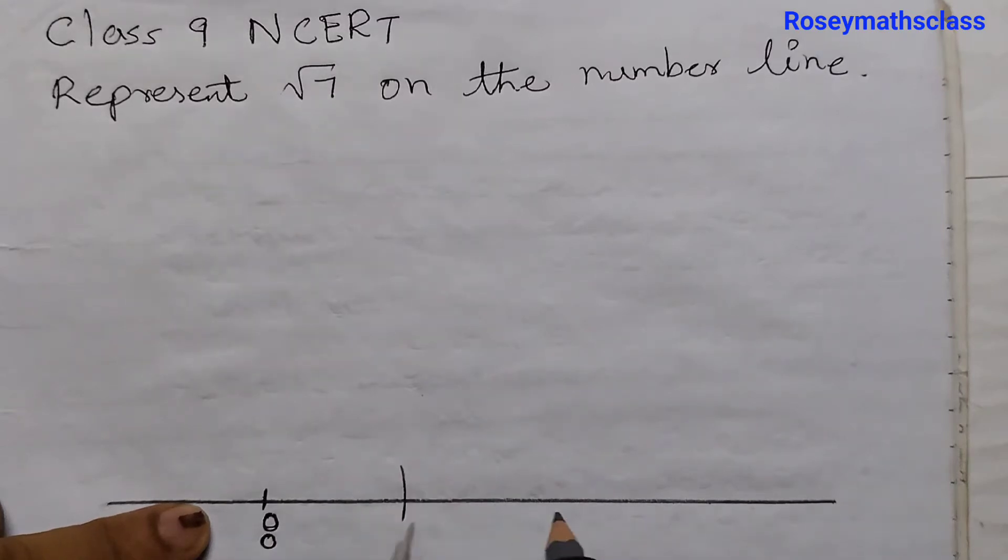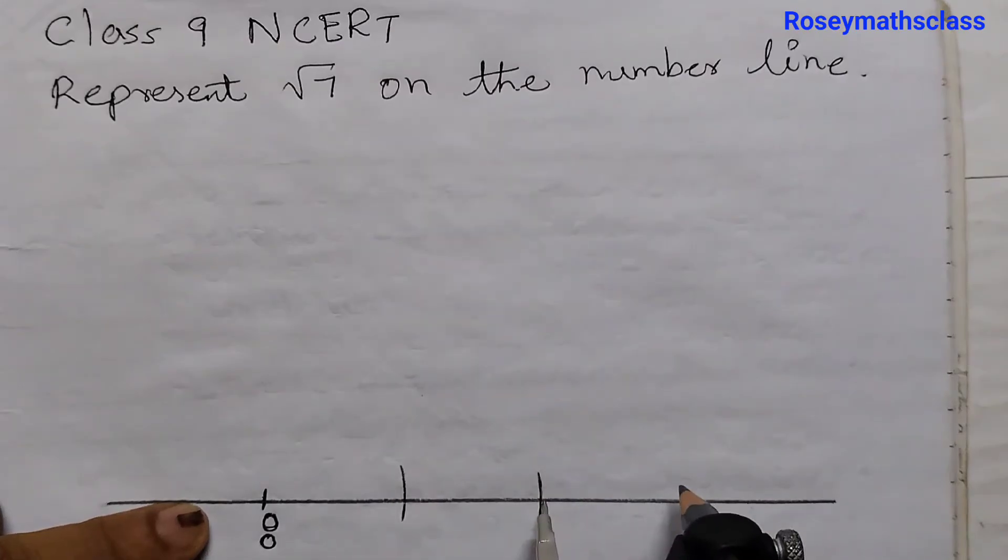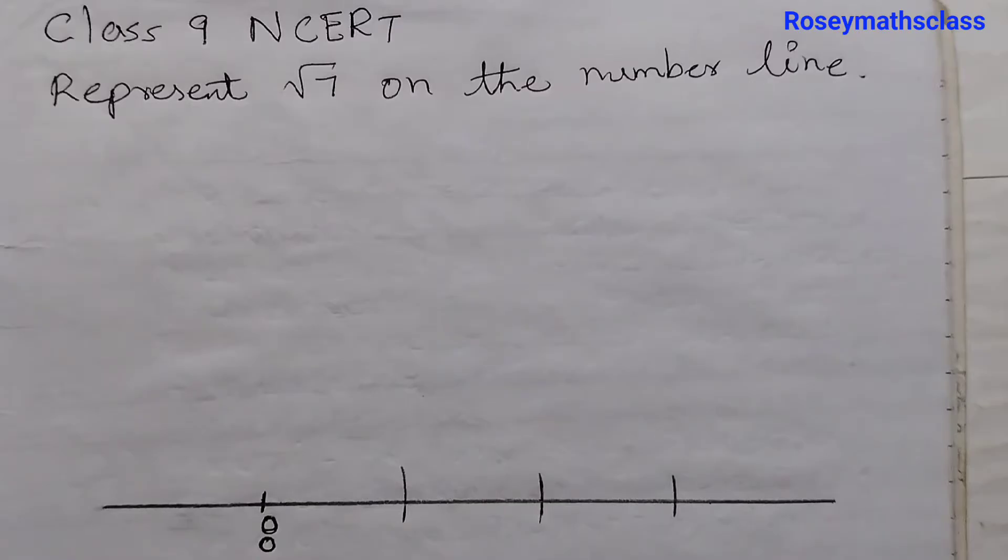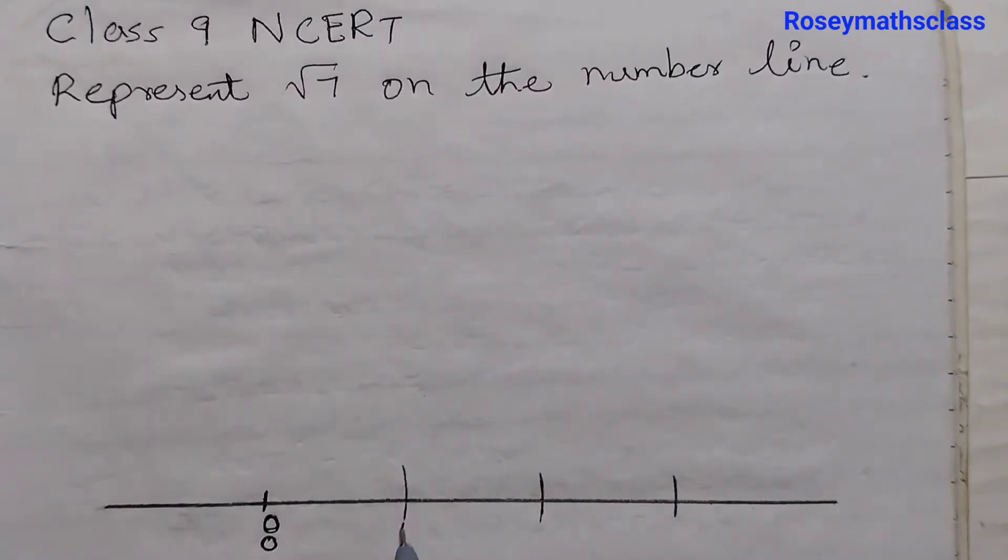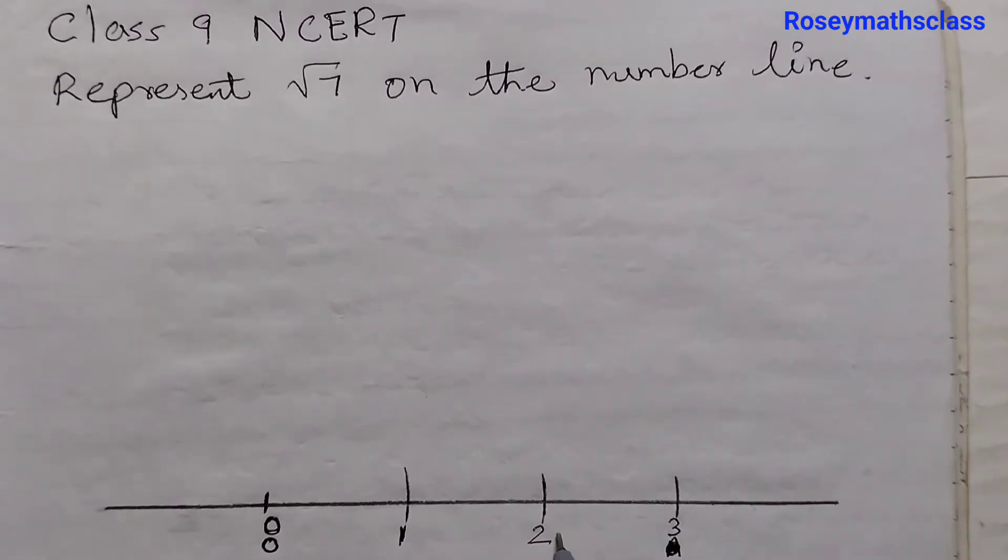First arc representing 1. Second arc representing 2. Third arc representing 3. We will label it 1, 2, 3. Let's say this is A.